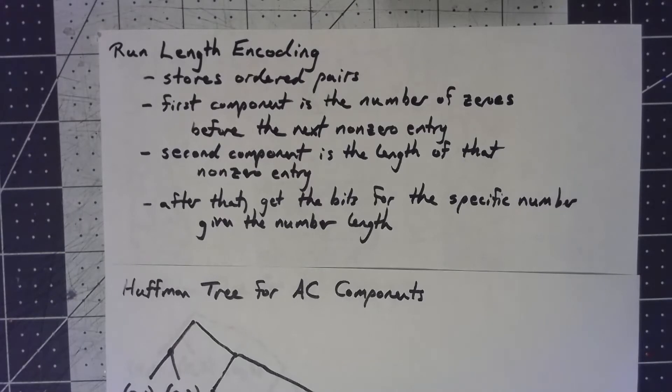After we encode that ordered pair, it knows, hey, I've got this many zeros to fill into the matrix. And then it knows how long the next number is going to be. And so it knows that the next few bits are going to be the specific number. We code the specific bits for the number exactly like we did for the DC component.